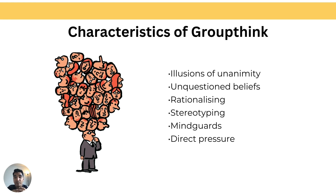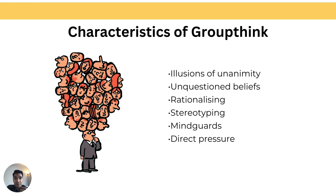The third characteristic is rationalizing — sometimes we overlook warning signs that challenge our beliefs, even though these signs can be valuable indicators that our decisions need more care. Furthermore, stereotyping is another hurdle to effective decision making. When we pigeonhole a different point of view, we miss out on diverse perspectives that could lead to better choices. The fifth characteristic is a mind guard, which prevents uncomfortable ideas or opposing thoughts from being heard in the group, stifling critical discussion.